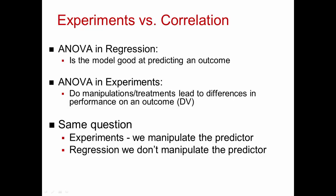When we're doing ANOVA in experiments, we're using it to see whether experimental manipulations lead to differences in the performance on an outcome or the dependent variable. By manipulating or treating a predictor variable, can we cause, and therefore predict, a change in the behavior? We're sort of asking the same question, but in experiments we systematically manipulate the predictor. In regression, we don't.